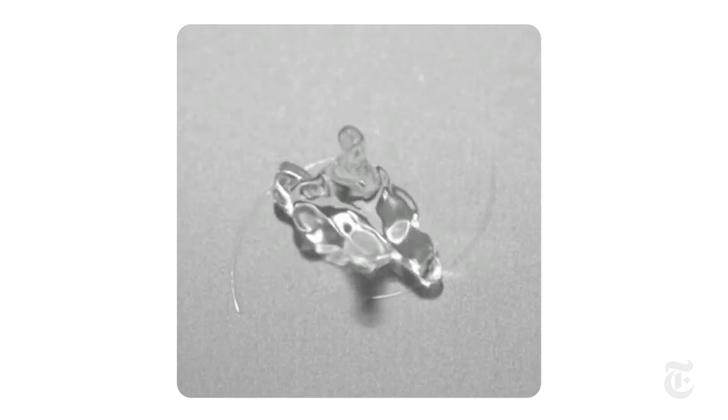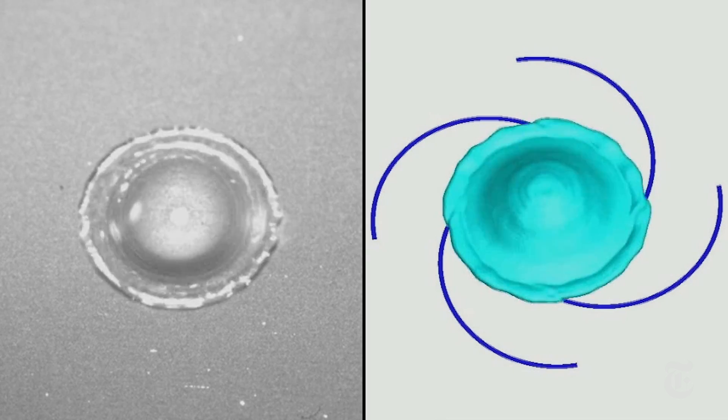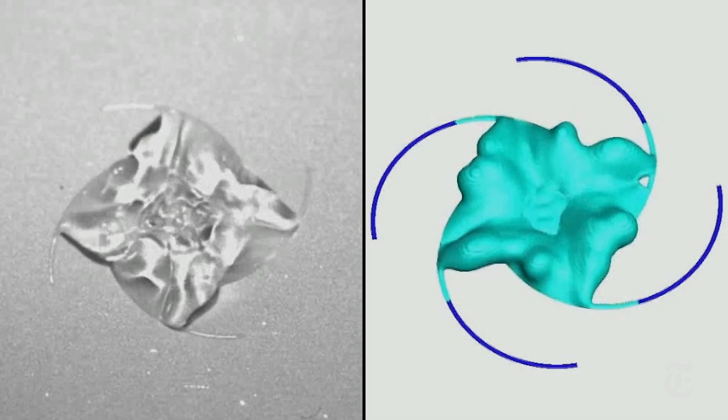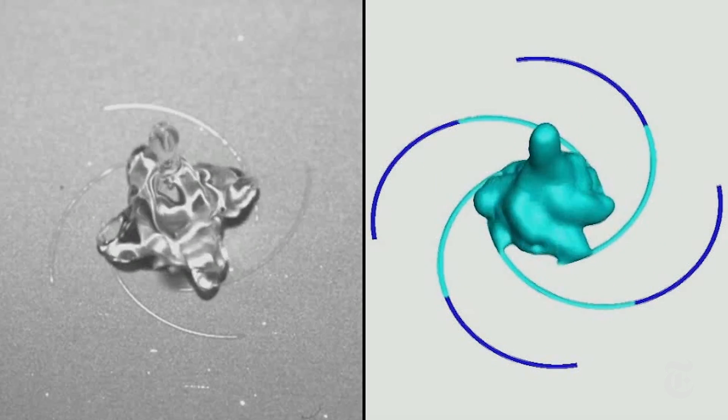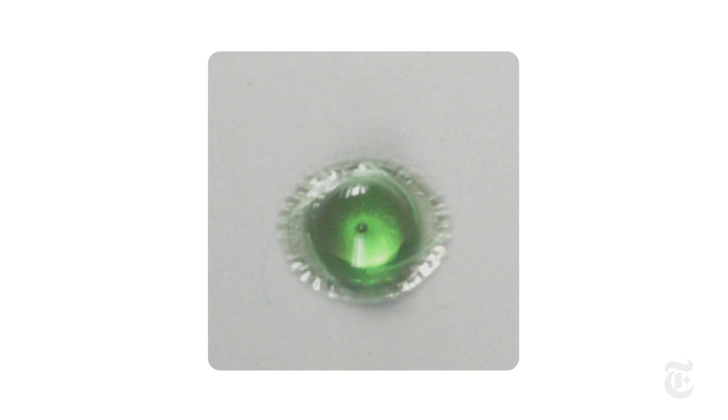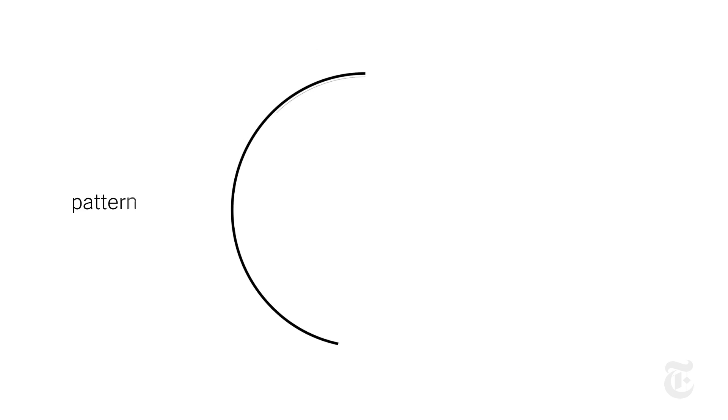But the researchers created a pattern of adhesive material on the surface that water sticks to. The water in contact with the sticky patches recoils more slowly than the water touching the repellent surface. And that makes the droplet spin. Change the pattern of the adhesive, and you change the shape of the dancing droplet.